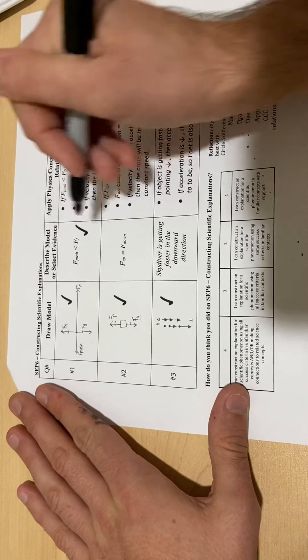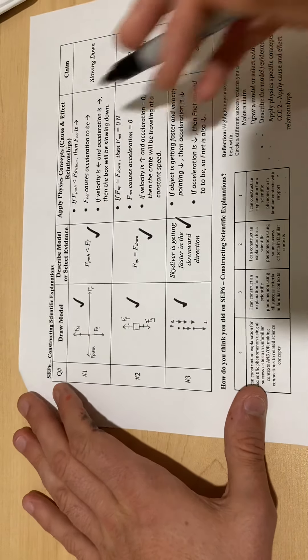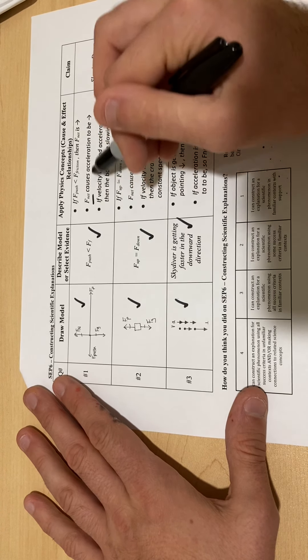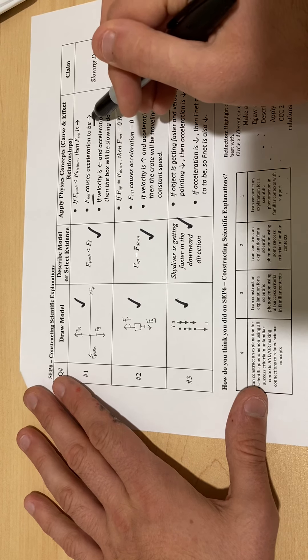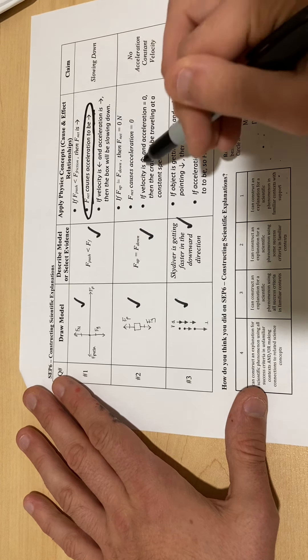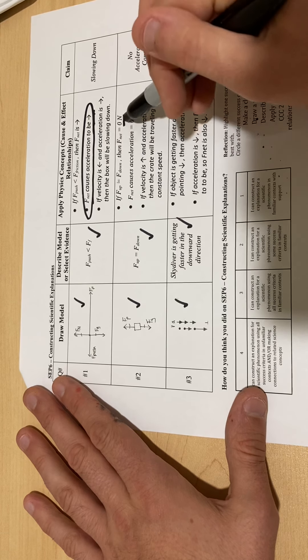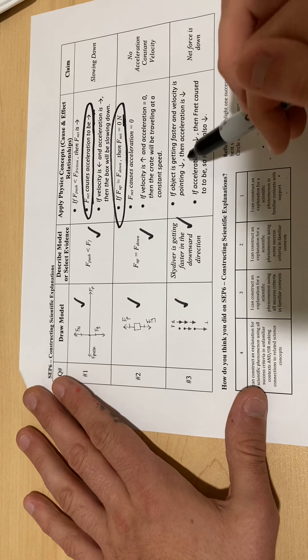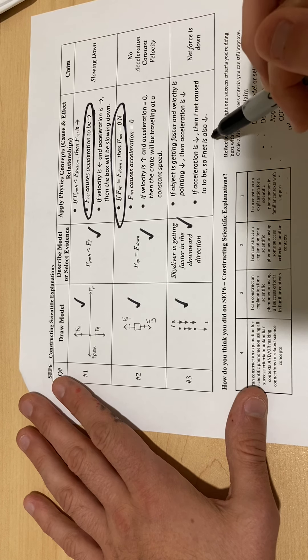But then when it comes to some of these explanations, like F_net causes acceleration to be to the right, maybe you said acceleration was to the right but you didn't say why, so that would be a circle. Or maybe you said the net force was zero but you didn't say why, that would be a circle. Or we didn't show how the net force and acceleration are linked.